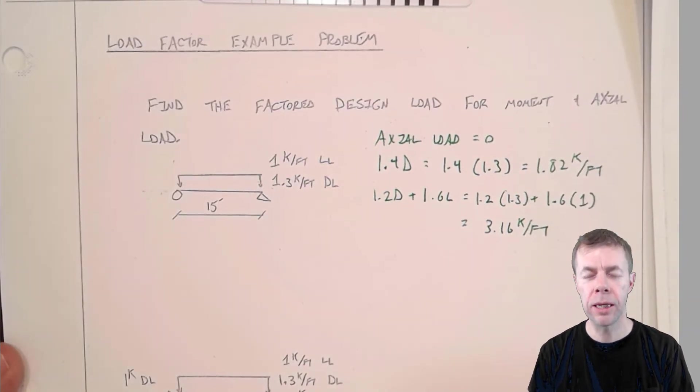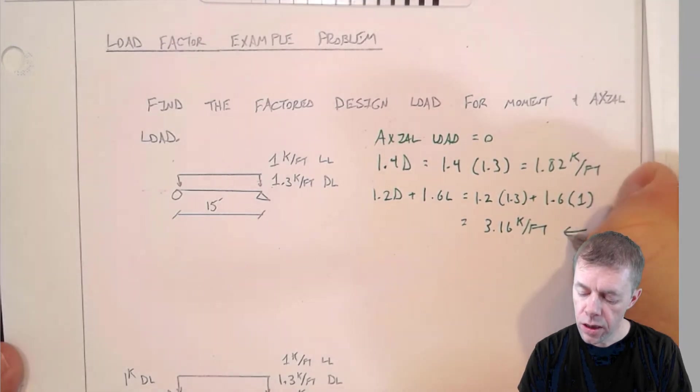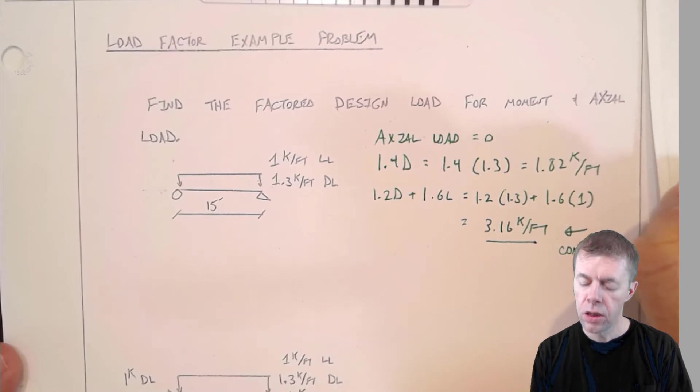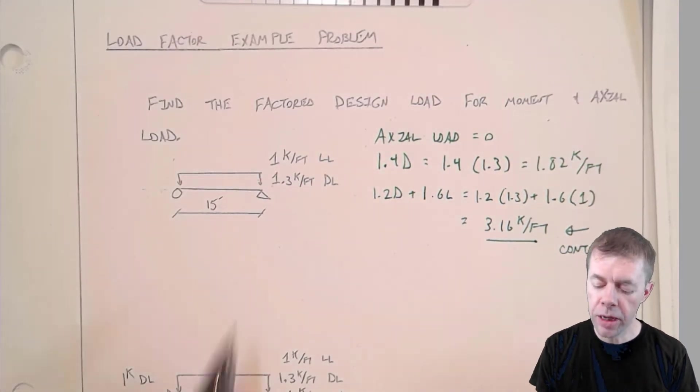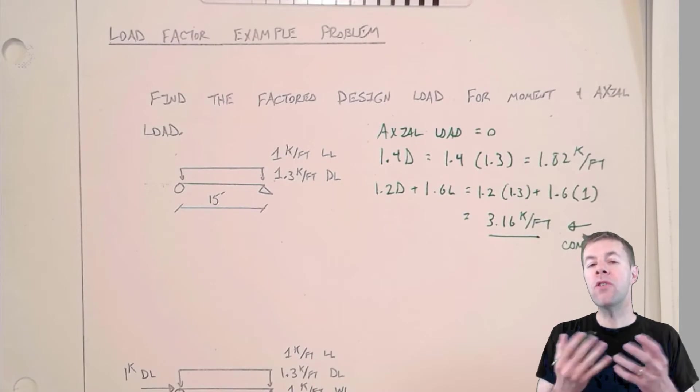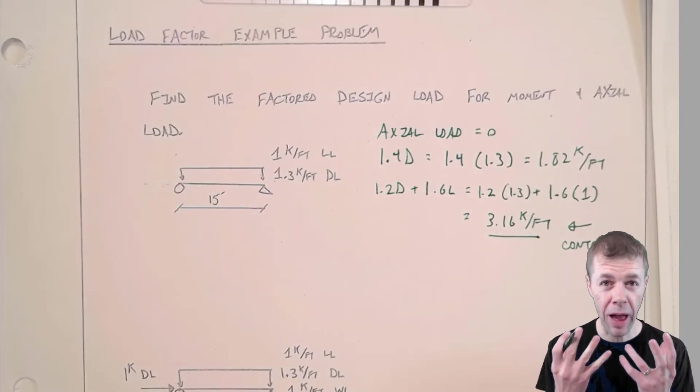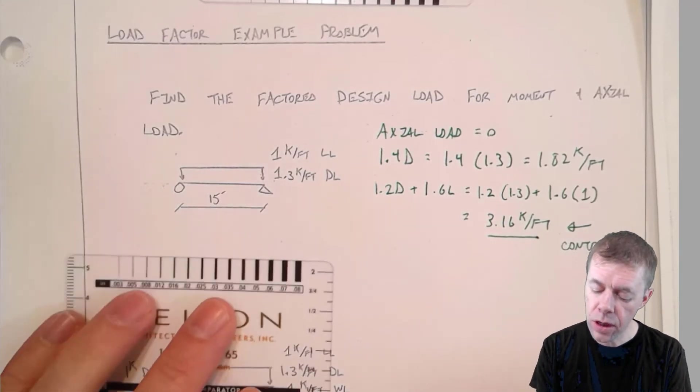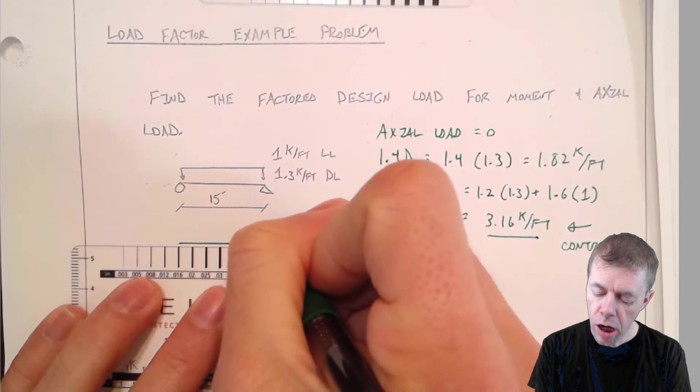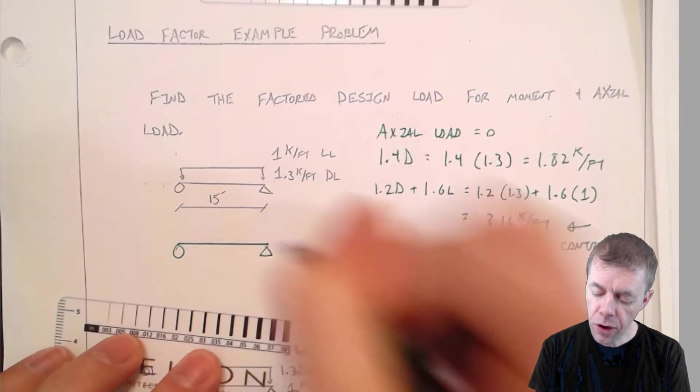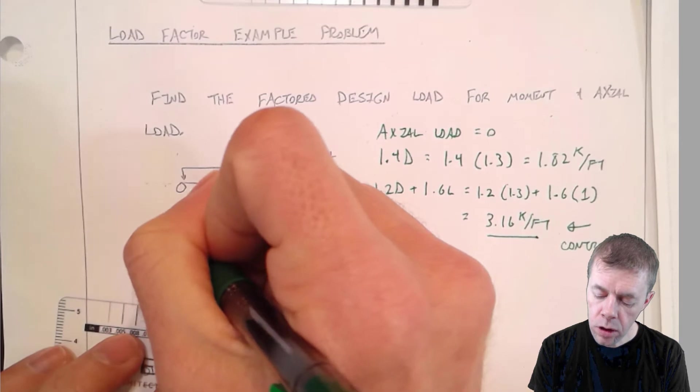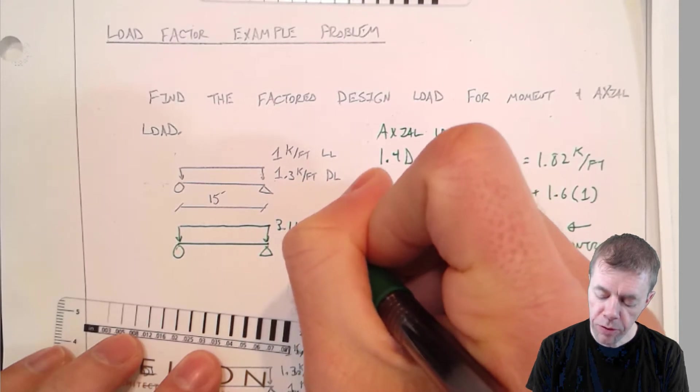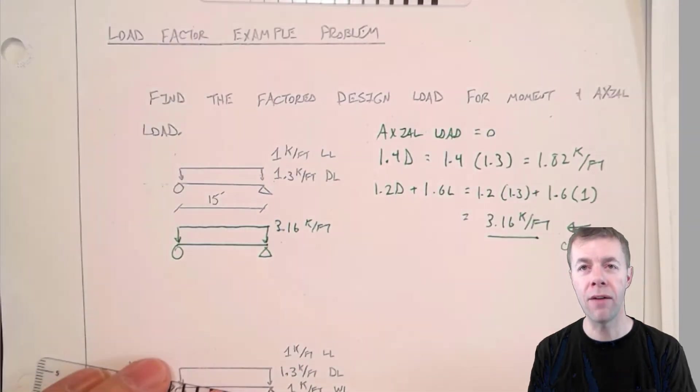Well this one's larger, so this one we would say controls. So now what we're going to do is we've taken this combination of live load and dead load, we've used our load factors to put safety factors on top of that so we can know what to design for. And we're now going to in a sense come up with a new structure with this on top of it, with now 3.16 kips per foot.